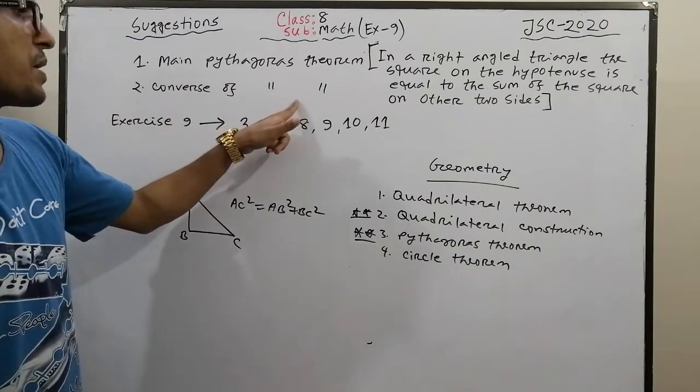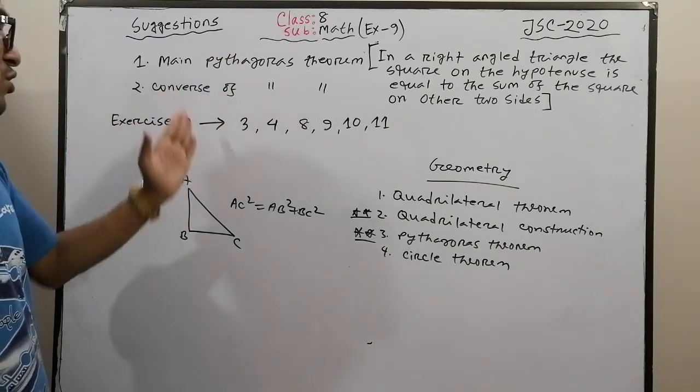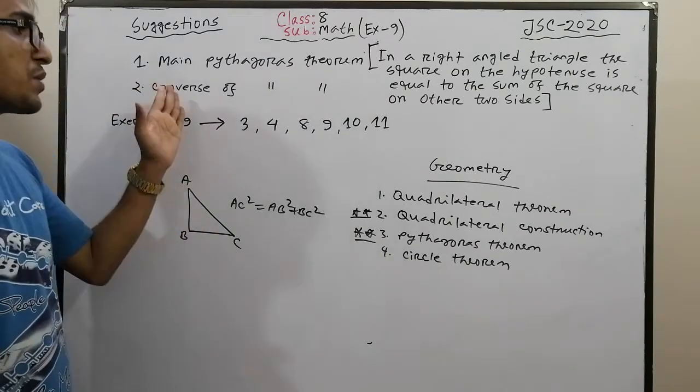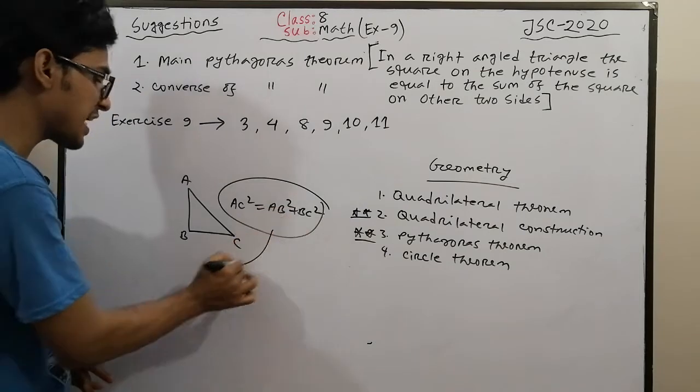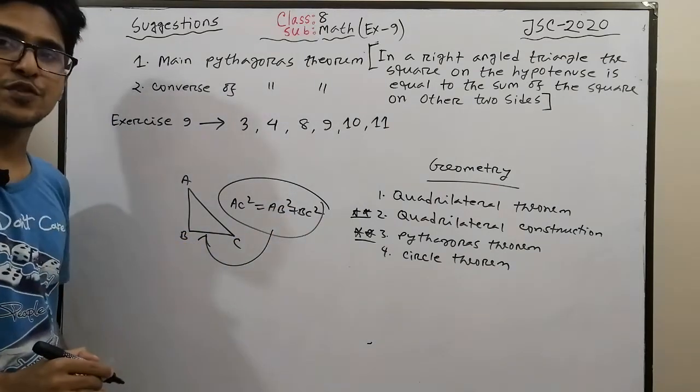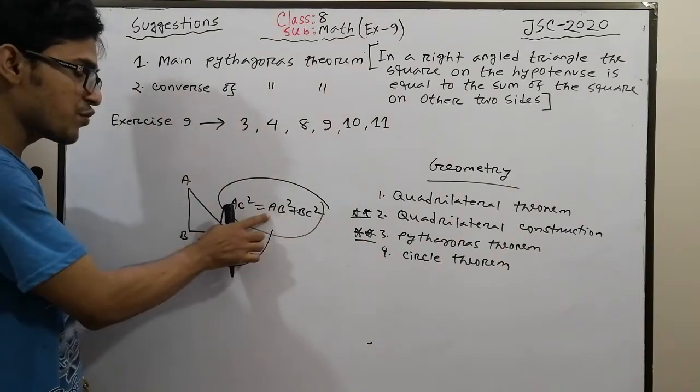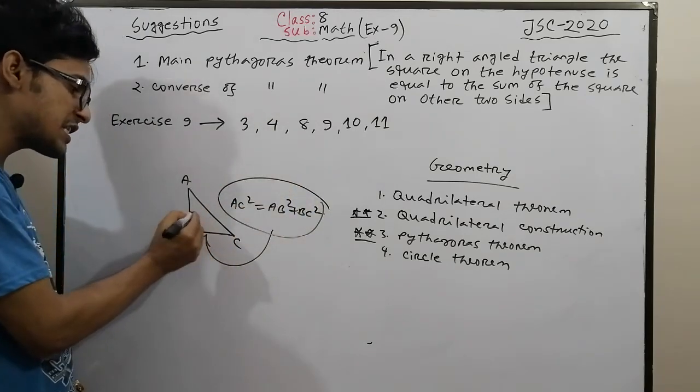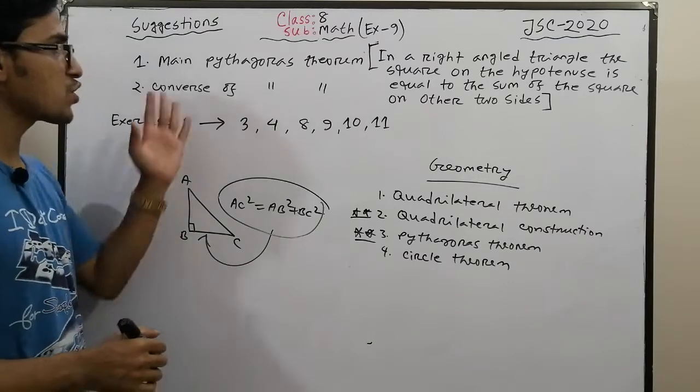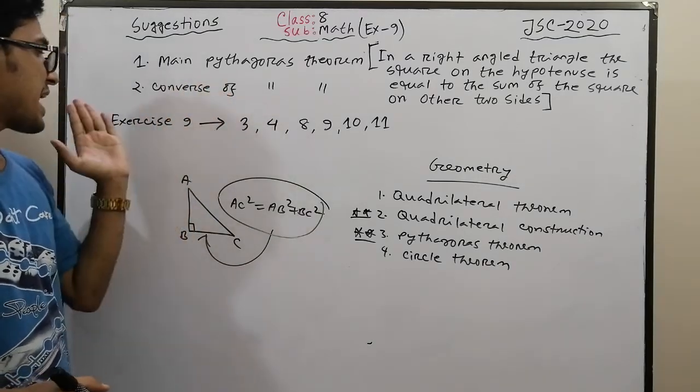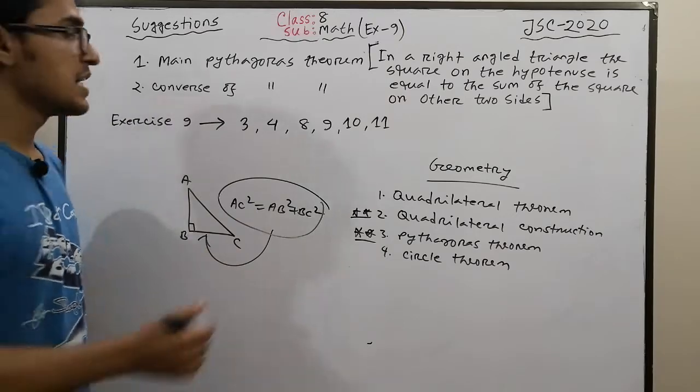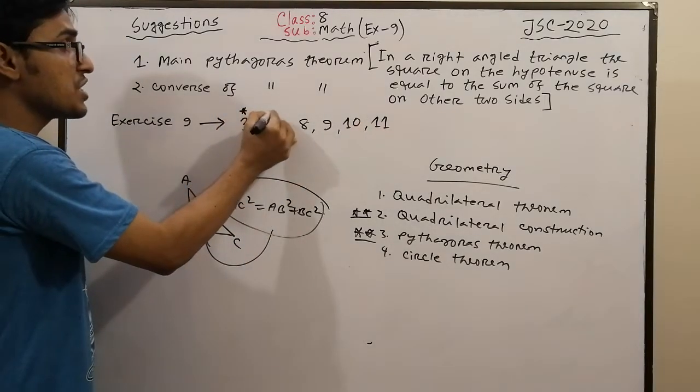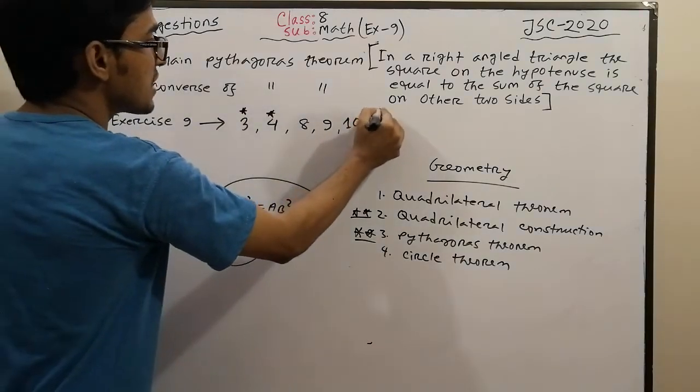In the next class, we'll prove this theorem. We'll also discuss the converse of the Pythagorean theorem. The converse proves that if the formula holds, it's a right-angled triangle. Exercise 9A has important questions.